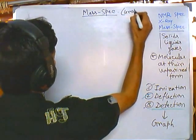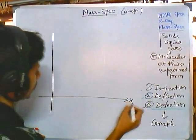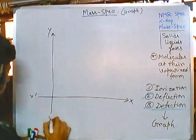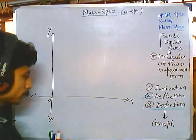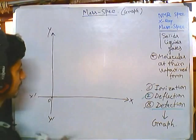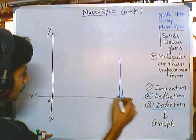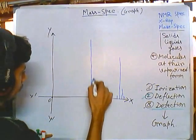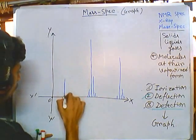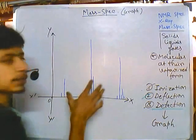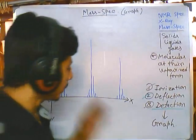So the graph is what we are talking about here. Let us draw it. A normal two-axis graph — it will look something like this. We are getting something like this, with an x-axis and a y-axis.